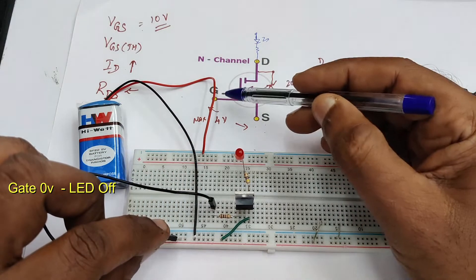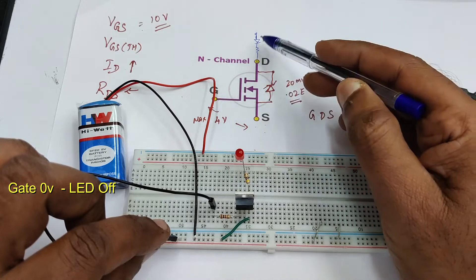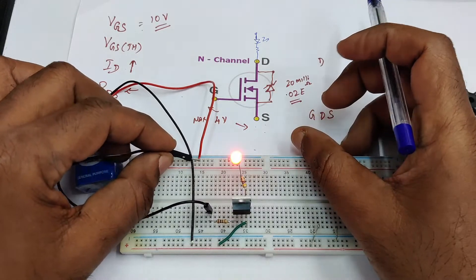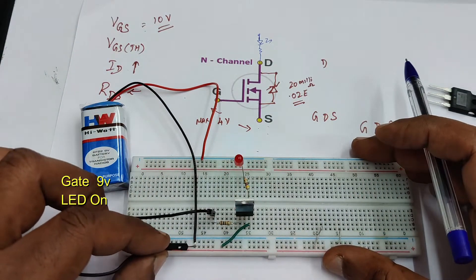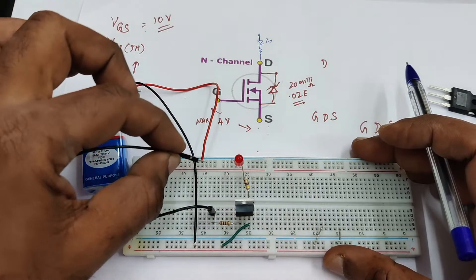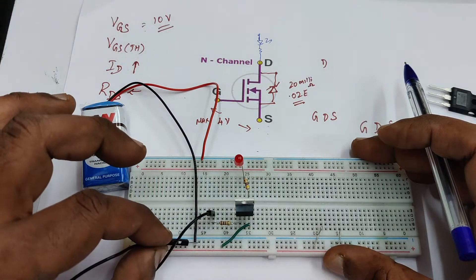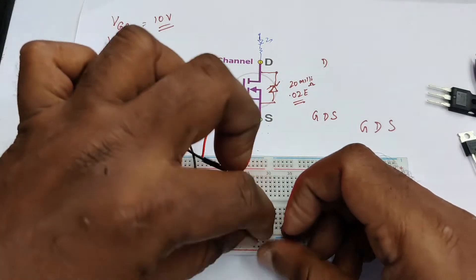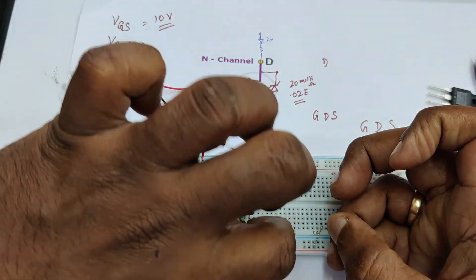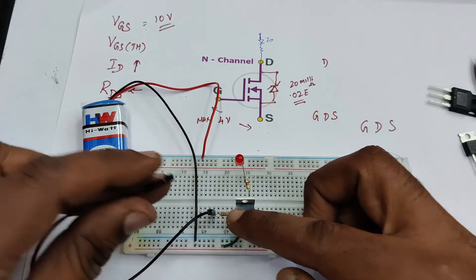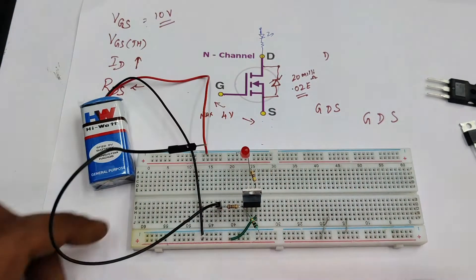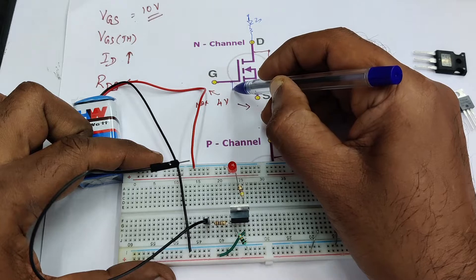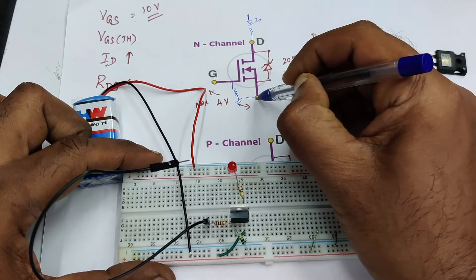The LED will stay on permanently until the capacitance is discharged — even if you remove the wire it stays on. If you touch the gate terminal to ground, the LED will go off as VGS threshold voltage goes to zero. Touch the gate terminal to positive and the LED is on; touch it to ground and the LED is off. This is how to switch the MOSFET. For safety, use a high-value 100kΩ resistor between gate and source, and the gate input should be through a low resistance of around 100Ω.